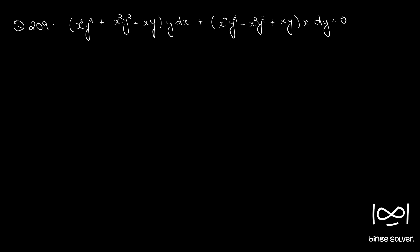Question number 209. x⁴y⁴ + x²y² + xy into y dx plus x⁴y⁴ minus x²y² + xy into x dy equal to 0.